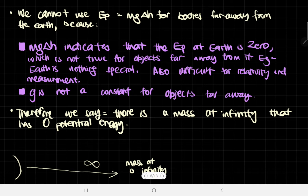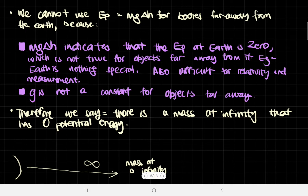And while it is really useful to consider for objects on Earth — for example, you lift a pencil up from your table and you give it a gravitational potential energy of one joule from what it was before — it's not true for objects far away from it. Why is it not true? Well, it's not technically false. It's just that it's very inconvenient to set the Earth as the zero gravitational potential energy.